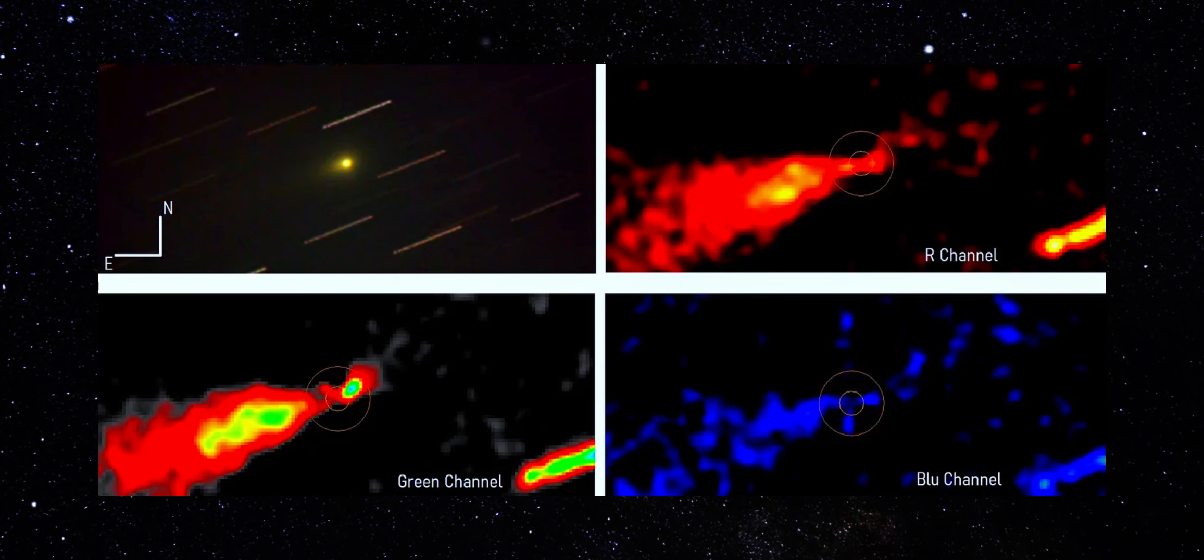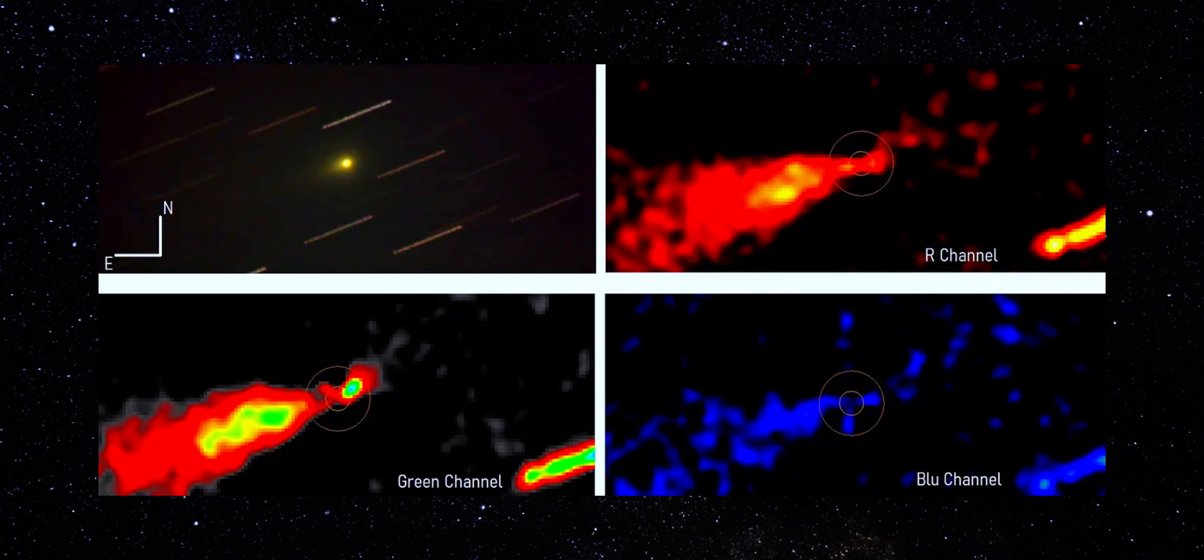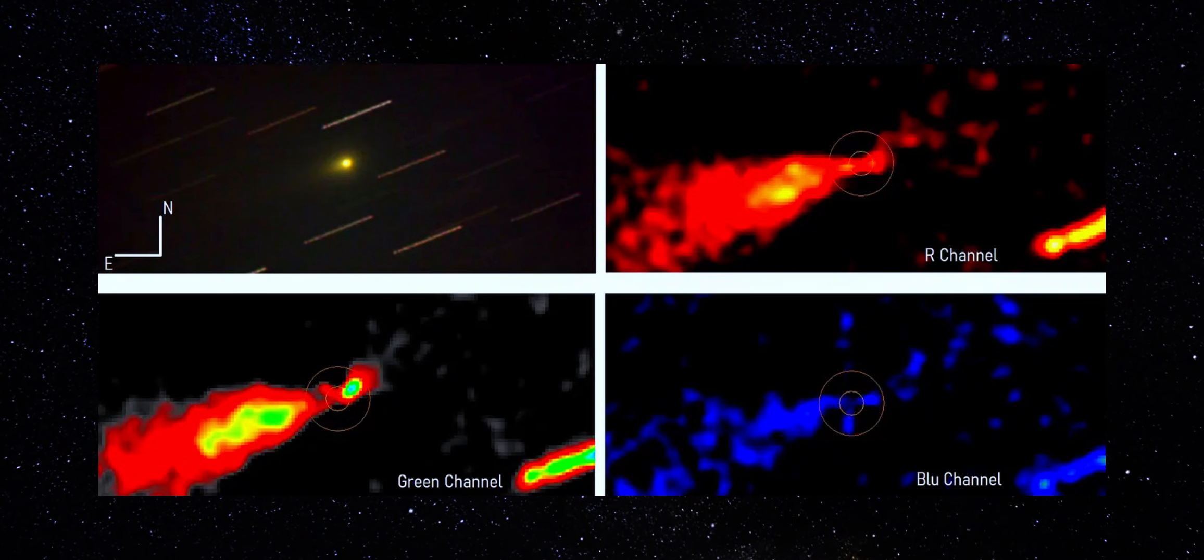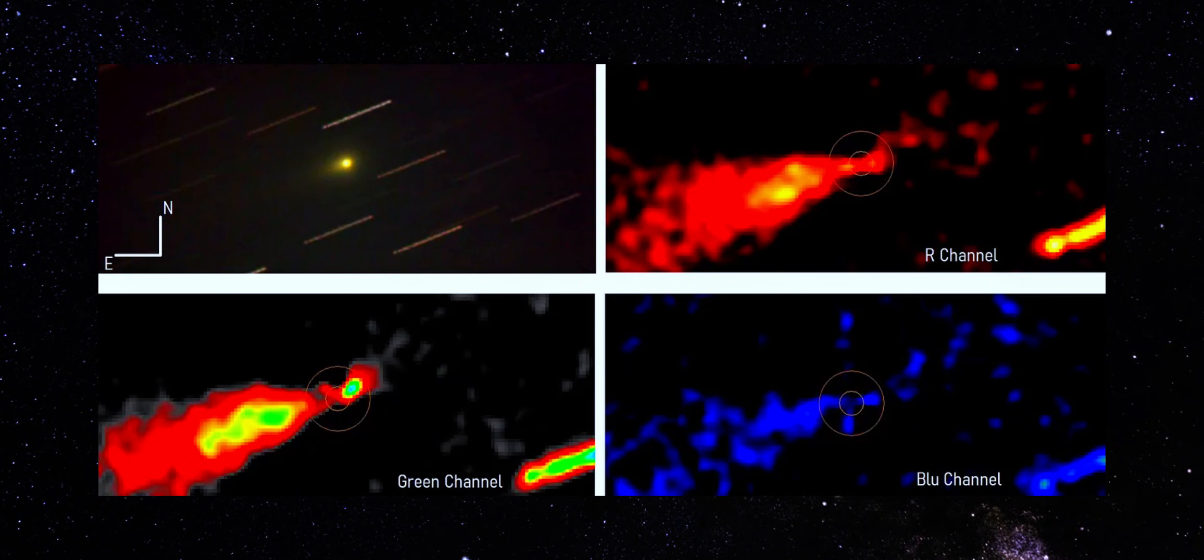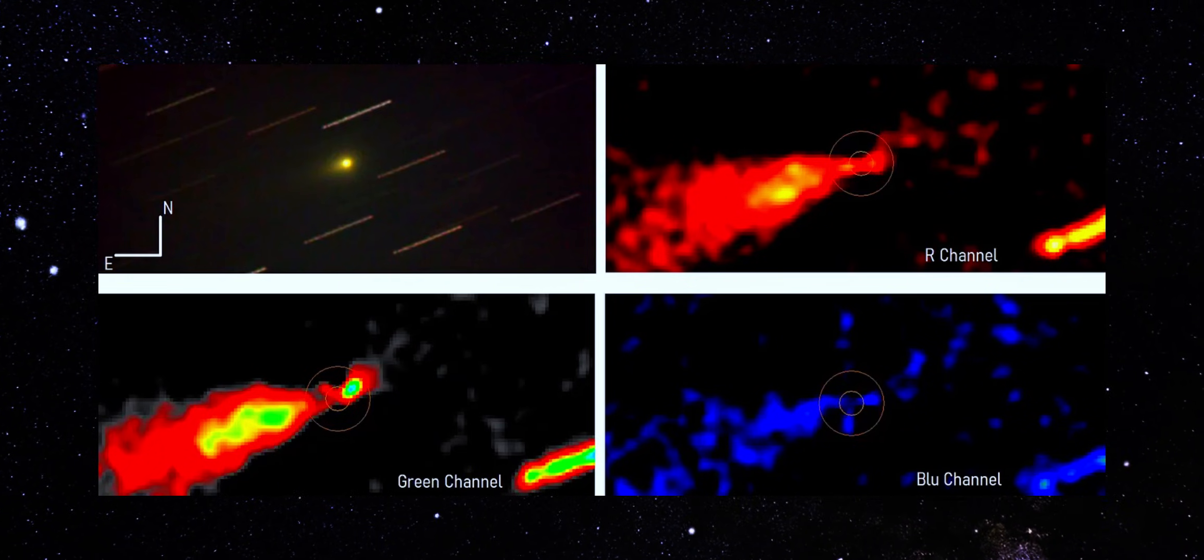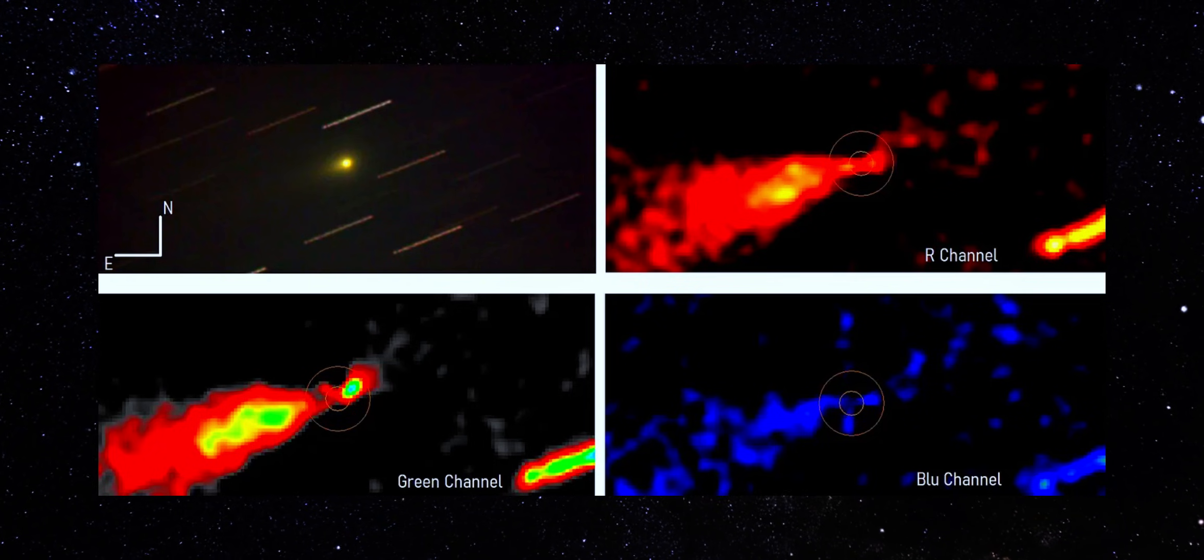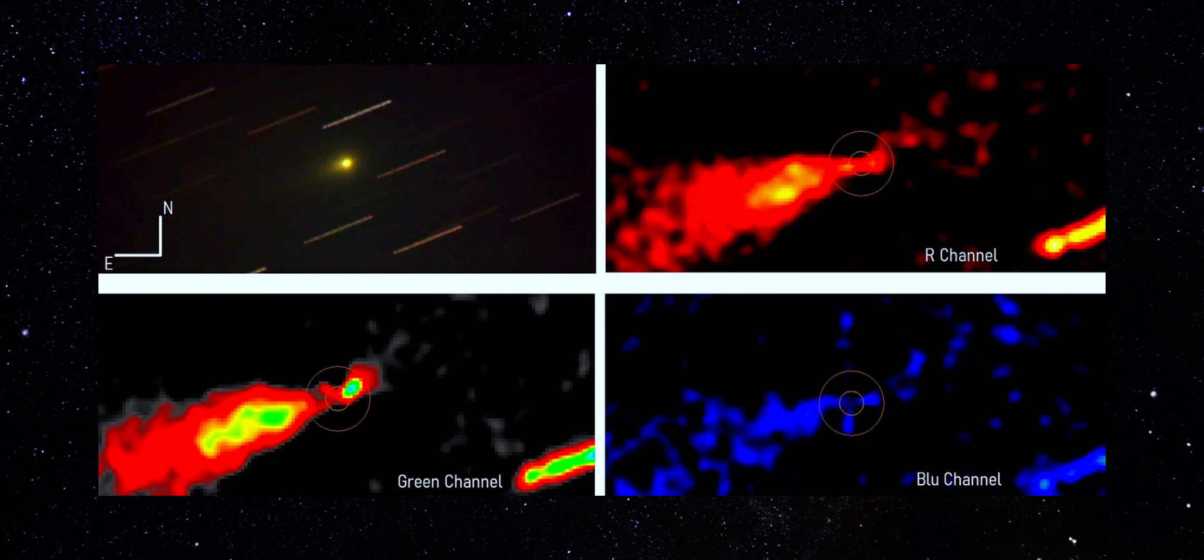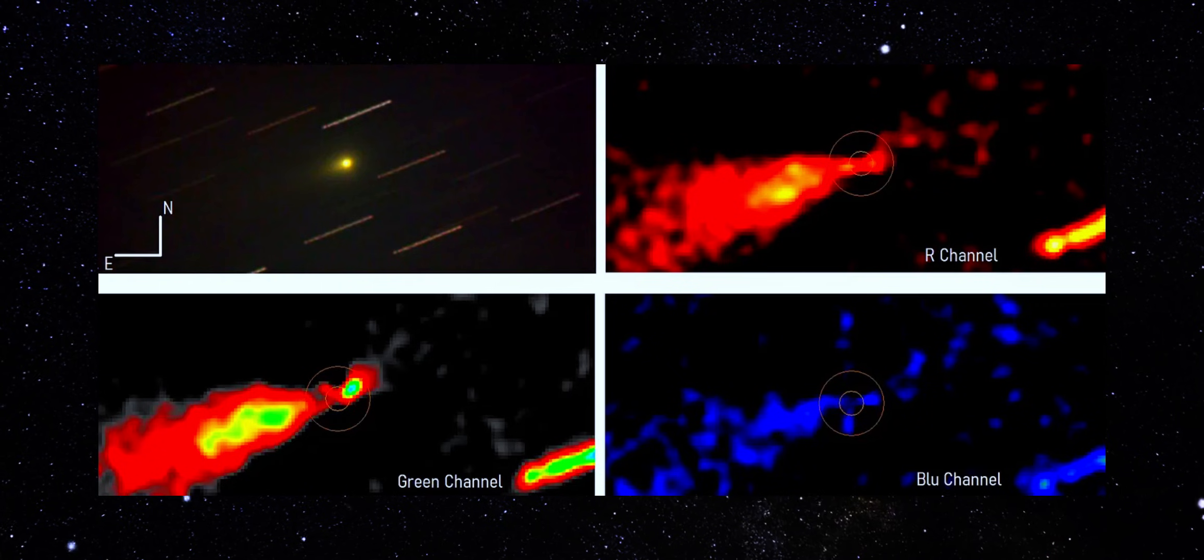Across 180 separate one-minute exposures, 3i Atlas keeps the same compact core and the same asymmetric envelope. If this were random cloud interference, tracking error, or transient noise, the shape would smear out over that timescale. It doesn't. Look at the background stars. They're slightly trailed, which tells you the telescope is locked on to the object itself, not the star field. That means every internal feature you're seeing is intrinsic to 3i Atlas, not a motion artifact.